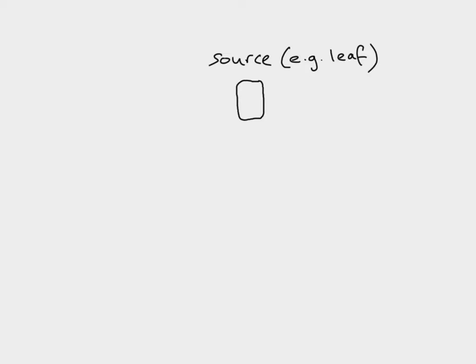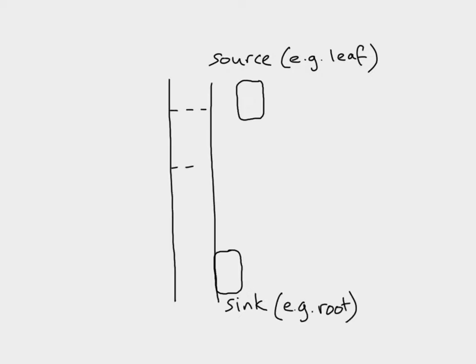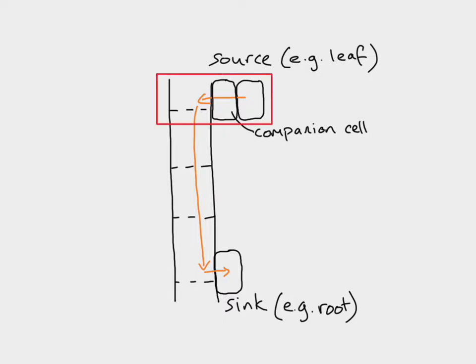Sticking to the simple example where the leaf is the source: here is a cell in the leaf and here is a cell in the sink — let's say the root. To get from source to sink, the sucrose first moves from the source cell into the phloem, then moves down through the phloem — past the sieve plates — and then moves into the cell at the sink. Next to phloem sieve tube elements are companion cells, which are very important in this process.